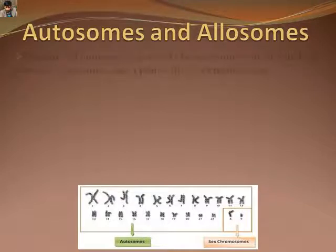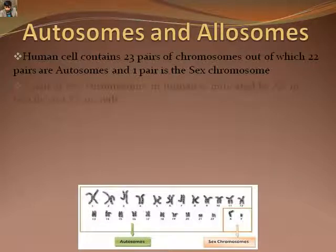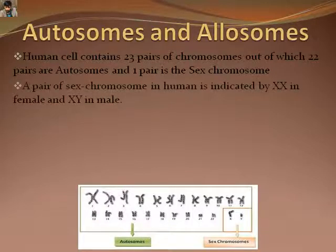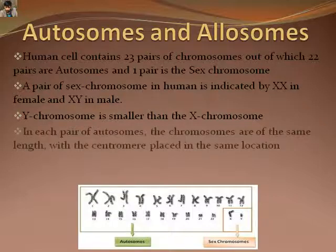In human beings, out of 23 pairs of chromosomes, 22 pairs are autosomes and one pair is sex chromosomes. Females carry XX sex chromosomes and males carry XY sex chromosomes. The Y chromosome is slightly smaller than the X chromosome. Due to the abnormal togetherness of allosomes, different disorders can be observed.